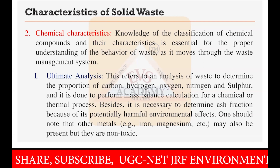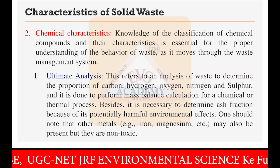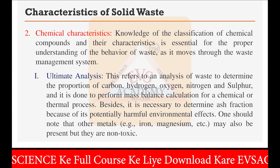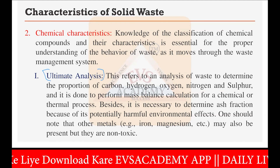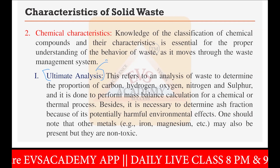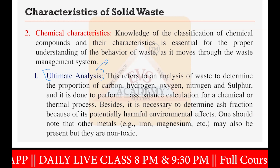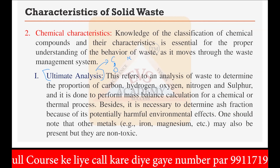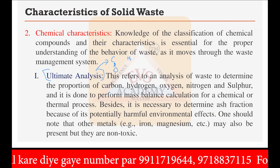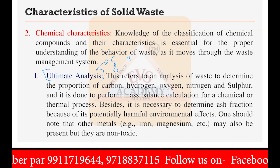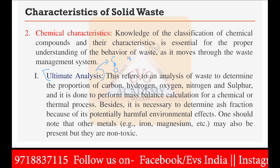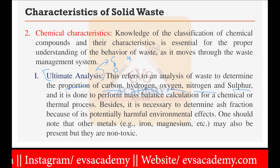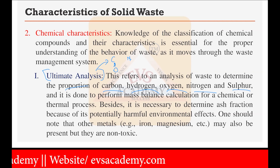The first chemical characteristic to study is the ultimate analysis. Ultimate analysis means total analysis — it tells you all details about the elements present in a particular solid waste. For example, how much carbon is present, how much hydrogen, how much oxygen, how much nitrogen, how much micronutrients. This refers to oxygen, nitrogen, and sulfur. It is done to perform mass balance calculations for chemical or thermal processes.